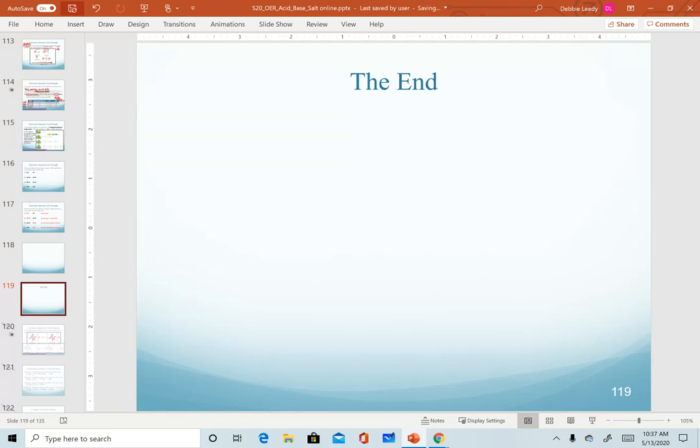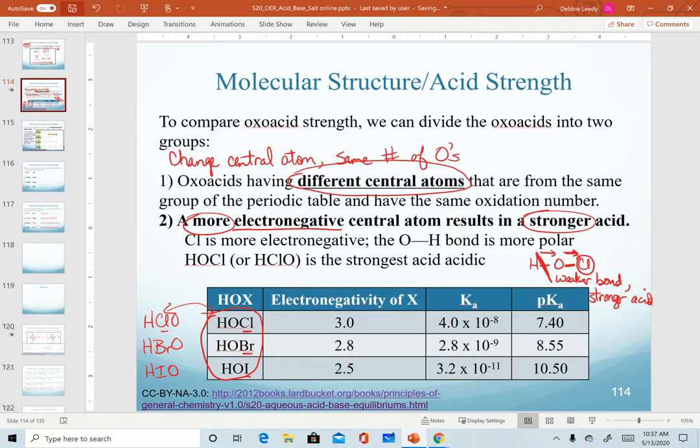When we are comparing acids where we have different central atoms but the same number of oxygens, we're looking at the electronegativity on our central atom. The more electronegative that central atom, the stronger the acid.